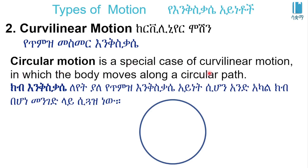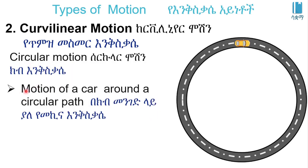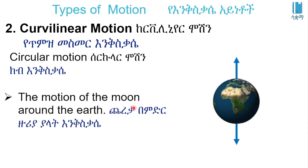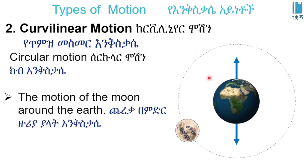Curvilinear motion has a special case called circular motion. Circular motion is when the body moves along a circular path. For instance, the motion of the moon around the earth is an example of circular motion.